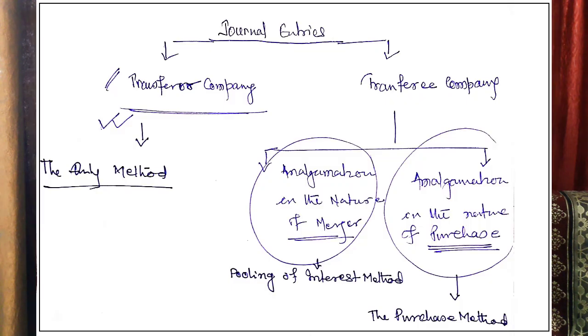Today we are going to discuss Journal Entries in the books of Transferor Company. Actually there are two parties: Transferor Company and Transferee Company. Journal entries are passed in the books of both. In the Transferee Company books, journal entries are passed in two ways: first, Pooling of Interest Method, and second, Purchase Method.